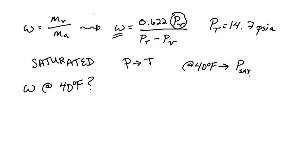So we say omega is 0.622 times, let's use a different color, 0.12 psia